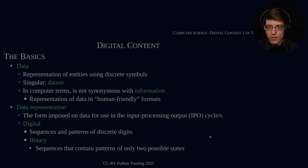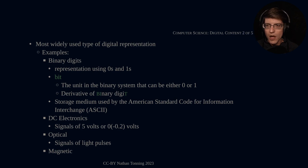Now we get into the most important form of digital, and that is binary. Binary are the sequences that contain patterns of only two possible states—states meaning it's either present or it's not present. One is presence and zero is absence. It's the most widely used type of digital representation. We have binary digits, representation using zeros and ones.